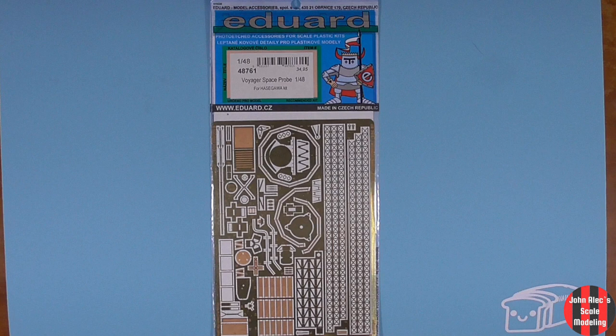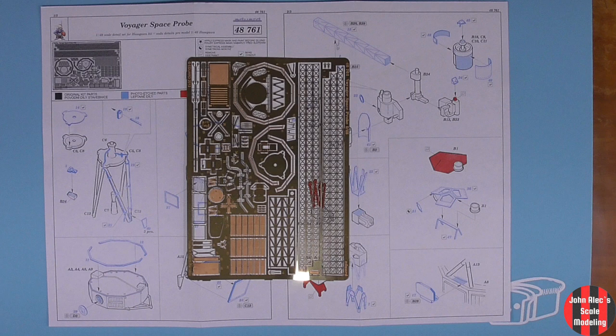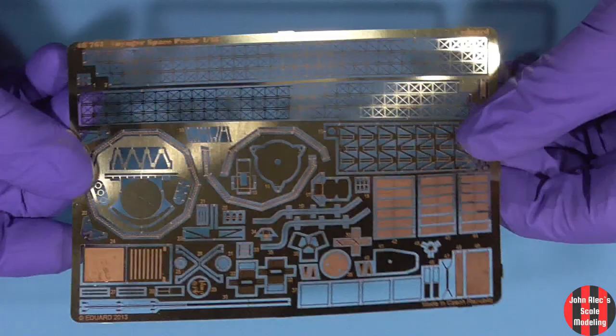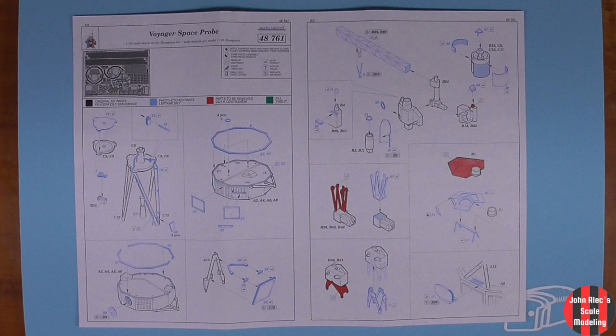Then I discovered Eduard makes a photo etch set for the kit. This is going to elevate it, especially the masts. The sheet is flexible enough. I'll just anneal it if I have to. It tells you what the Hasegawa parts are, the new photo etch parts, and the parts of the original kit you cut out.